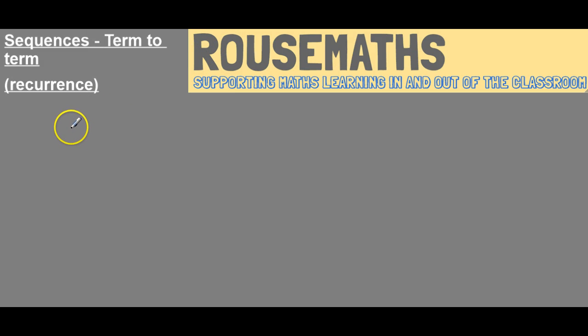Hi there, we're looking at sequences from core 1 and particularly a term-to-term relationship or recurrence relationship. So I'm going to first of all set up a sequence and I'm going to tell you that the first term is k, and then the second term is 2k plus 3, and the third term is 2k plus 6, and the fourth term is 4k plus 9.